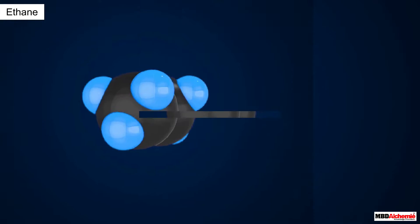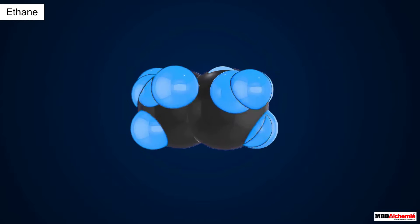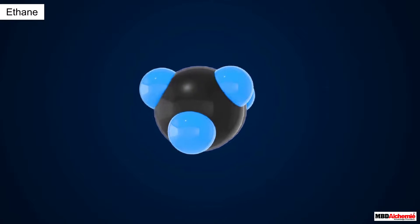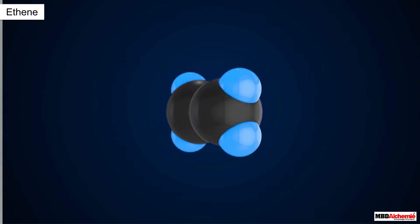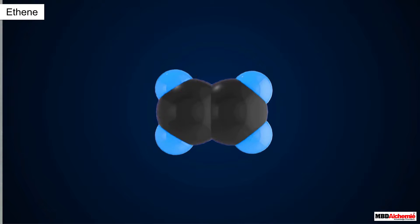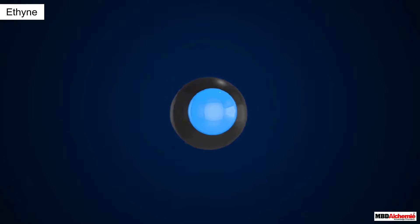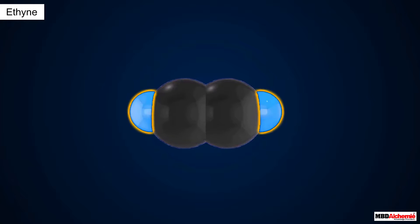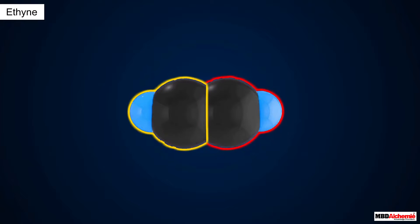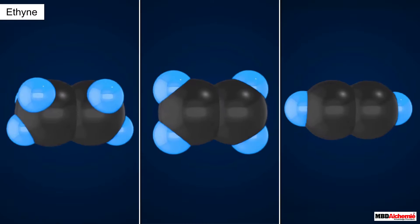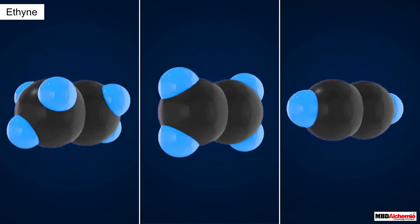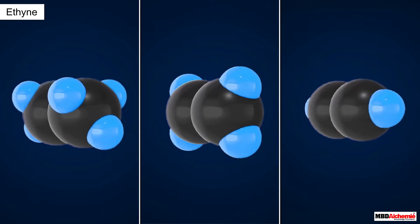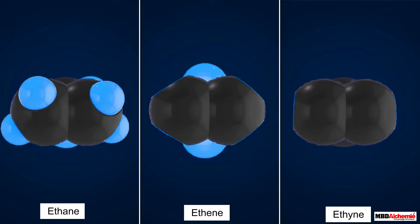In an ethane molecule there are six hydrogen atoms, three linked to each carbon atom. In an ethene molecule there are four hydrogen atoms, two linked to each carbon atom. And in an ethyne molecule there are only two hydrogen atoms, one linked to each carbon atom. Now the question is why the number of hydrogen atoms in these molecules is different.